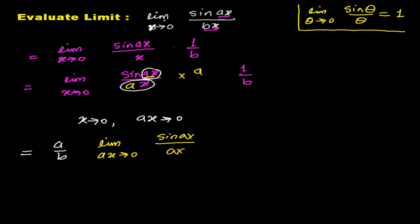Limit: this whole angle ax tends to 0, sine of angle over the angle. Can't you see this is exactly like the standard form? When limit as angle tends to 0 of sine angle over angle equals 1.